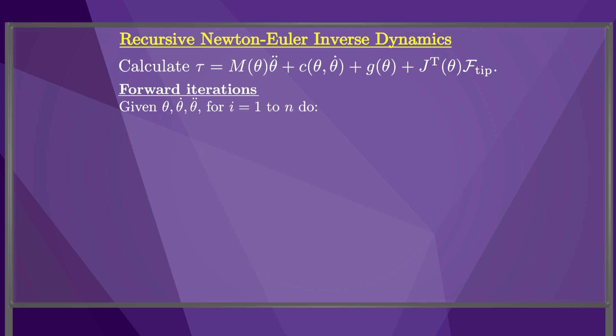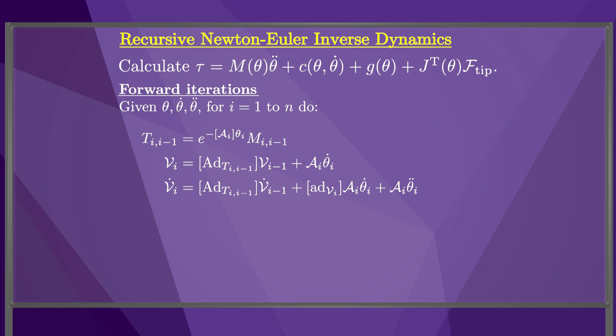First, the configuration of frame i-1 relative to frame i is given by the formula shown here. Next, the twist of link i is the sum of the twist of link i-1 expressed in frame i — using the matrix adjoint of T_{i,i-1} calculated in the first step — plus the added twist due to the joint velocity theta_i dot times the joint screw axis A_i. Finally, the acceleration of link i is the sum of the acceleration of link i-1 expressed in the i-frame, plus an acceleration due to a velocity product term consisting of the Lie bracket of the twist v_i and the joint velocity times the joint screw axis A_i, plus an added acceleration of the joint acceleration times A_i.